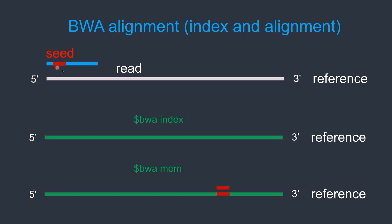I'm showing the seed sequence within this read. The seeds are first aligned using FM index, then the entire read is aligned by extending the seed from both sides. This is how BWA efficiently aligns reads to the reference.